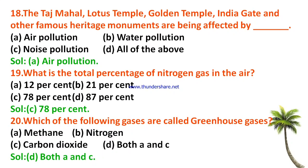The total percentage of nitrogen gas in air is 78%. Which gases are called greenhouse gases — methane, nitrogen, carbon dioxide, or both methane and carbon dioxide? The correct answer is both methane and carbon dioxide. Which river is called the world's most polluted river — Ganga, Chenab, Kaveri, or Yamuna? The right answer is the Ganga river. Which are the primary causes of water pollution — plants, animals, human activities, or none? Human activities are the primary causes of water pollution.